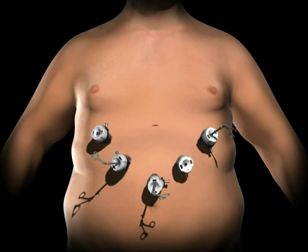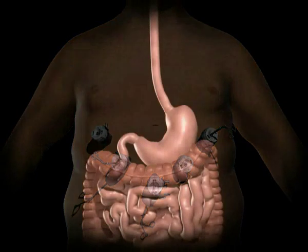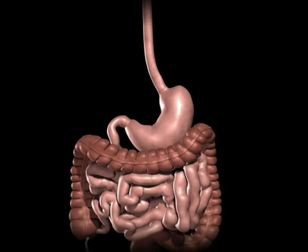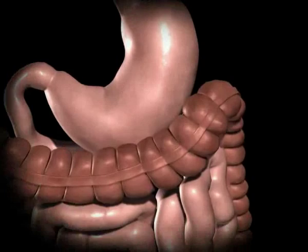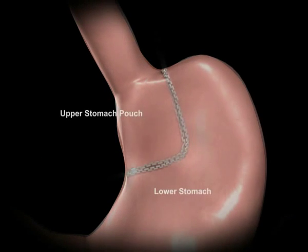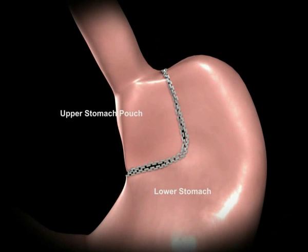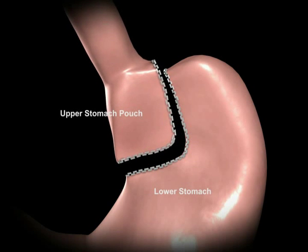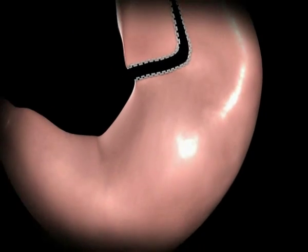The surgeon examines the abdominal cavity using a laparoscope or video camera. A small stomach pouch is created using a stapling device. This smaller stomach pouch restricts the amount of food that can be eaten before feeling full.